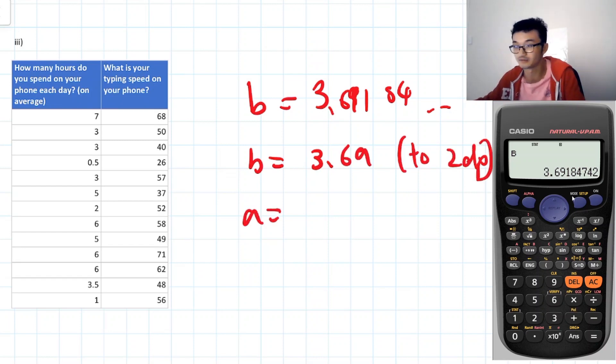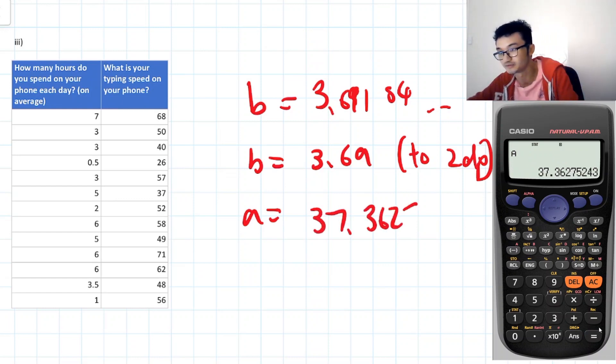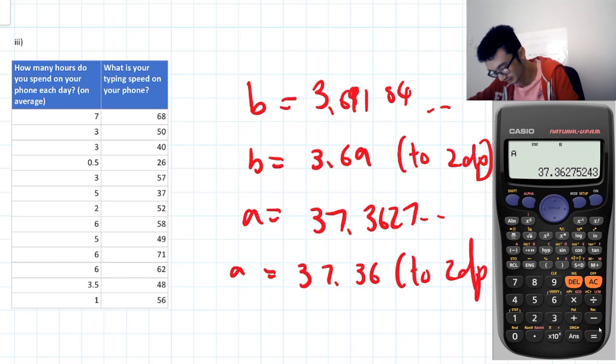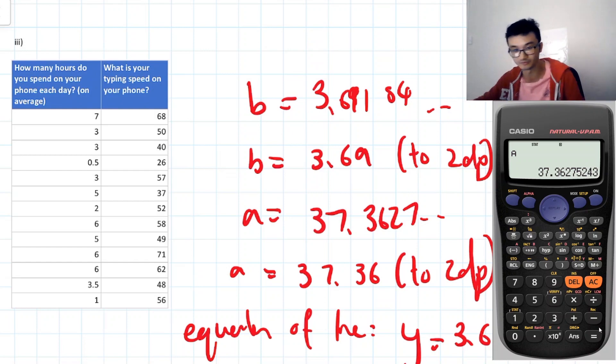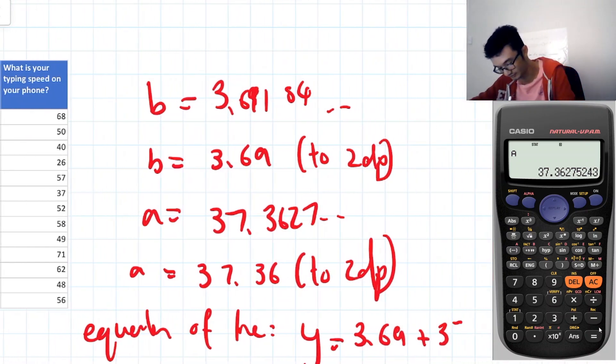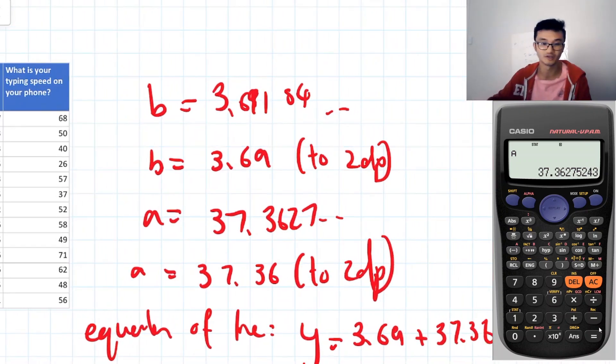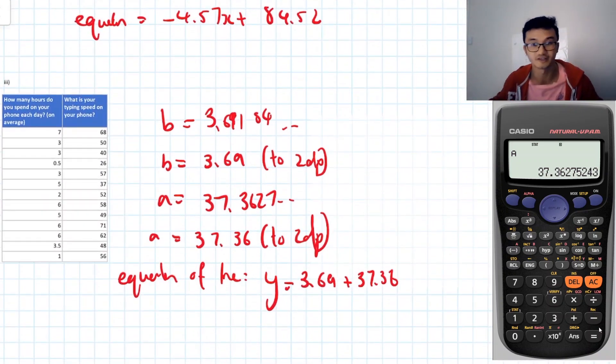Okay. And then A is going to be equal to, let's go back, shift one and five, and then one again. Okay. That's going to be 37.3627. And so that's 37.36 to 2dp. And putting that all together, our equation of the line is going to be Y is equal to 3.69X plus 37.36. Okay. Awesome. And that's our equation of the line, using this calculator method.